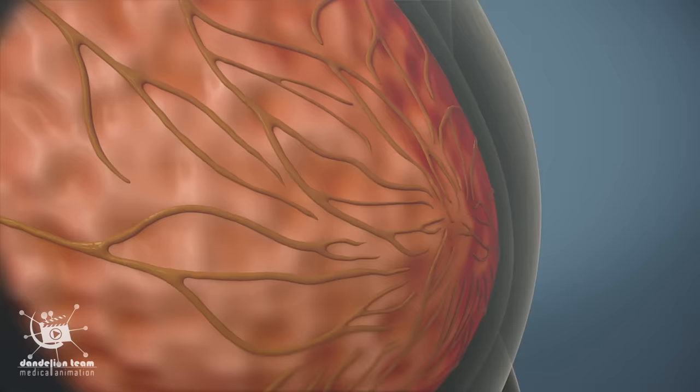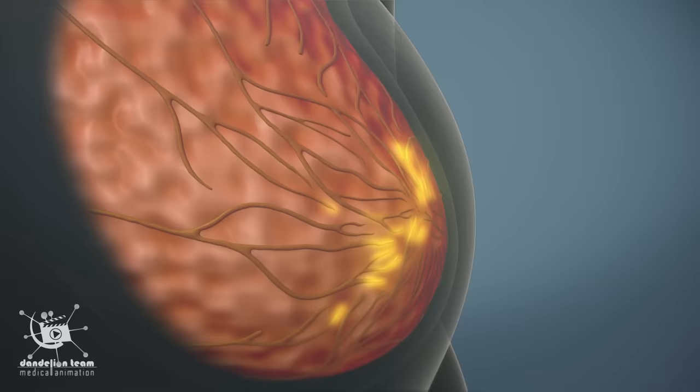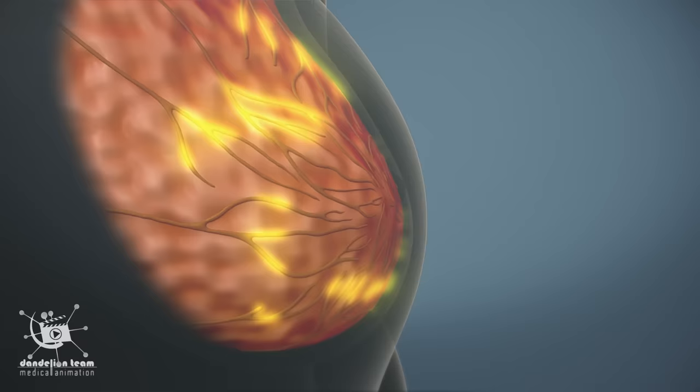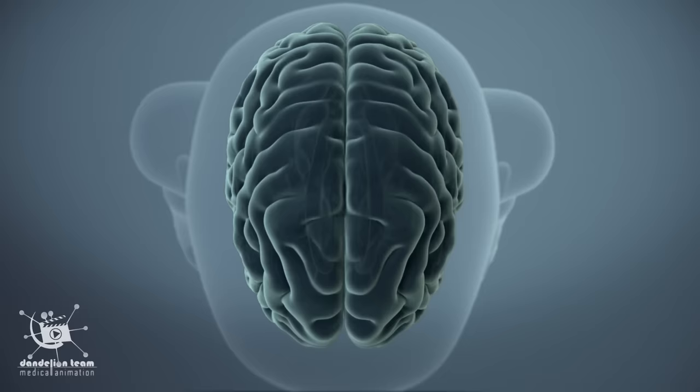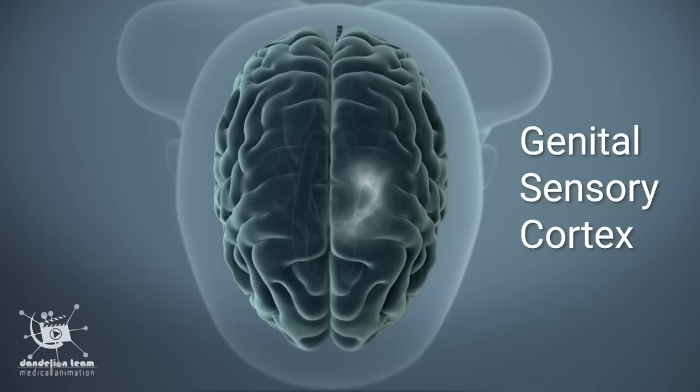Each nipple has hundreds of nerve endings, making them super sensitive tissue. When the nipples are stimulated, they send sparks in the genital sensory cortex. This is the same area of the brain that's aroused by vaginal or clitoral stimulation.